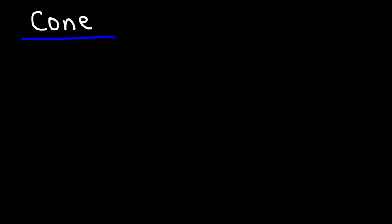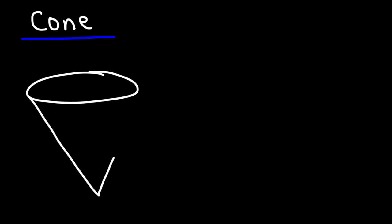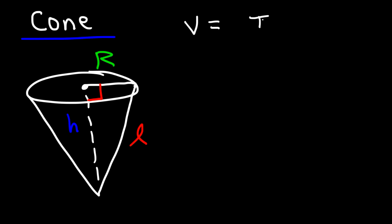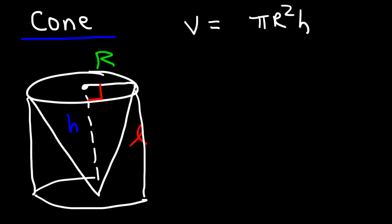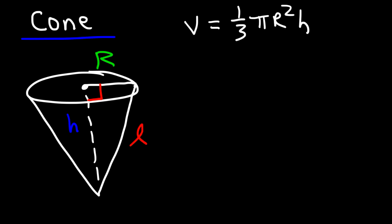The next shape is the cone. We have the radius R and the height H, and notice there is a right triangle on the inside where L is the slant height. The volume of a cone is very similar to the volume of a cylinder — it turns out the volume of a cone is one-third that of a cylinder. So it's one-third pi R squared times the height.